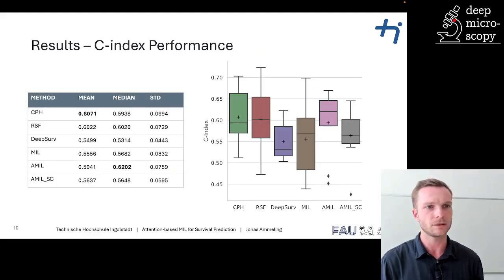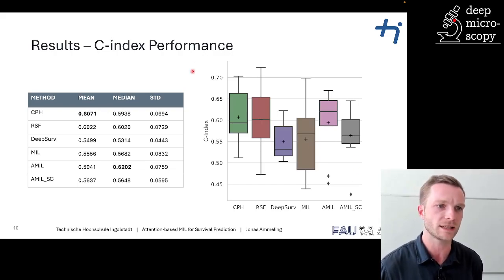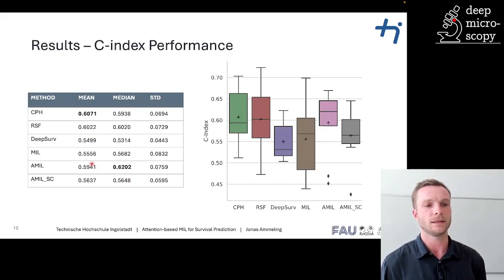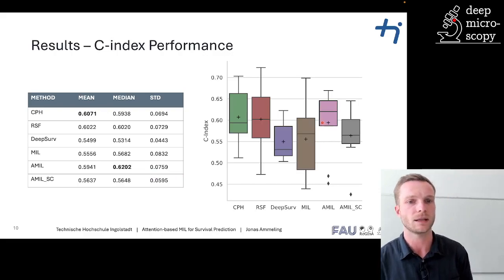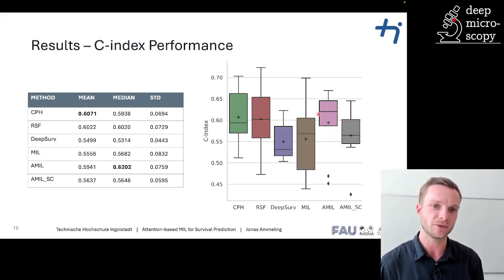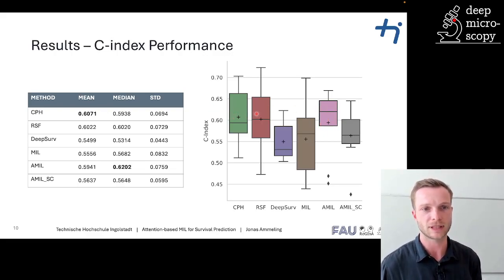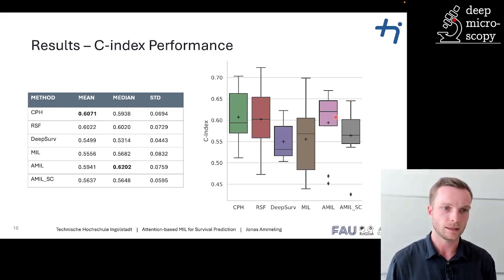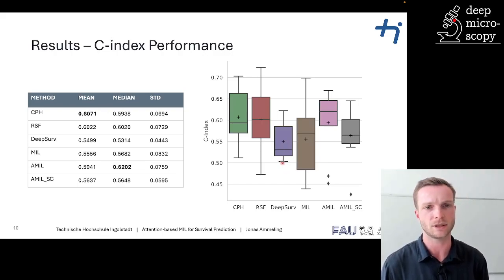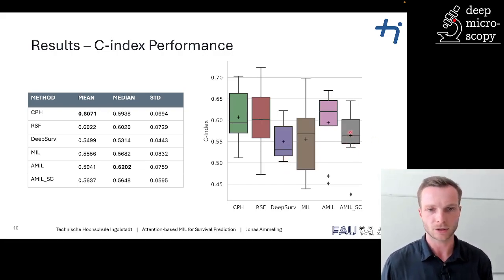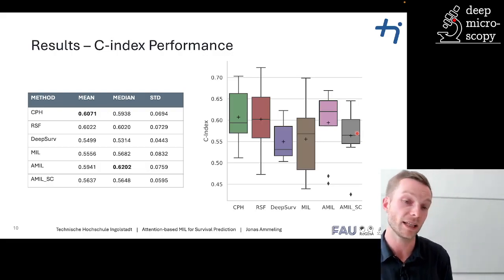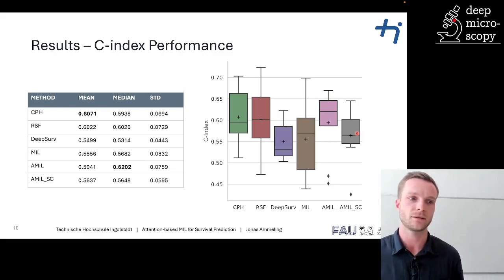Here are the results for the C-index performance. Overall, the classical Cox model had the best mean performance. However, our attention-based multiple instance learning methods performed similarly well — in fact, the median performance is slightly higher compared to the Cox model or the random survival forest, which indicates that the method is slightly more robust in our experiments. The DeepSurv method performed worse in our comparisons. The single-core evaluation showed a slight decrease in performance, indicating that patient-level information is not equally represented by all tissue cores.